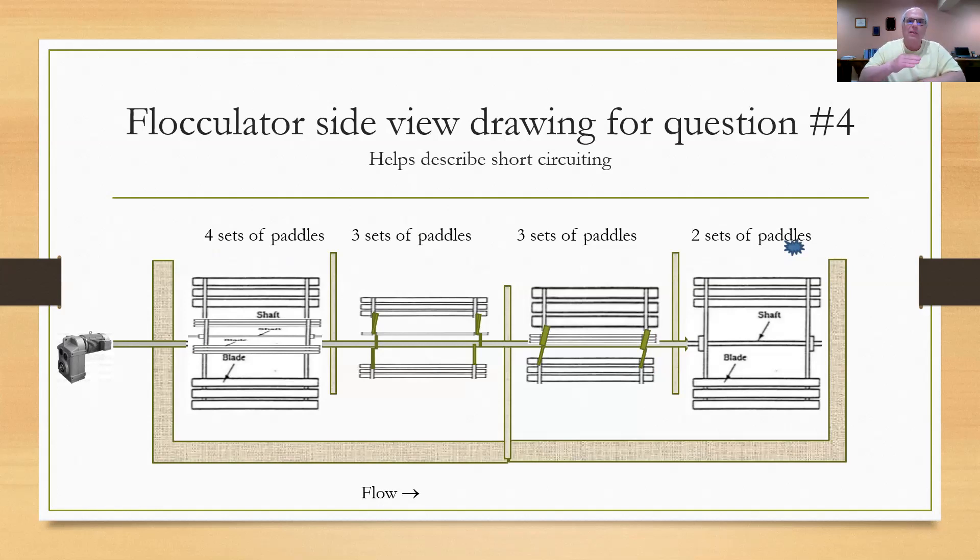While that water is following that S-shaped path, of course, the paddles are going around this way and giving you the energy input that you need to form the floc particles. So we get this barrel roll type of motion, water going up and down this way and being turned this way. And that's an ideal situation for flocculation. So with four compartments and all these sets of paddles, we have a lot of control over this kind of situation, which is very good.